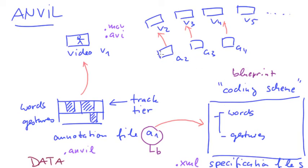So in each of these annotations, you have two tracks, and they are called words and gestures. And you wouldn't want these things to be called otherwise. And so in Anvil, they all point to the same specification file S.